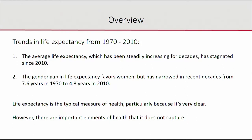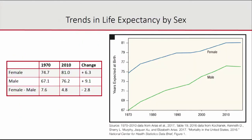Life expectancy is one frequently used measure of health — by no means the only one, but one advantage is it's very clear and easy to be consistent over time. In 1970, an infant girl was expected to live to almost age 75, and today an infant girl is expected to live to almost 81 — about a six-year increase — whereas for men it was about a nine-year increase over that time period. You can see the gender gap narrowing in this figure.